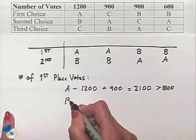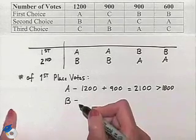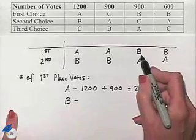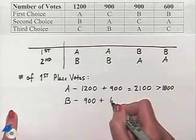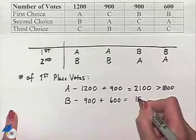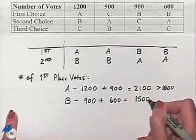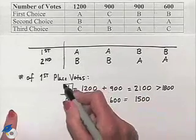If you want to go ahead and figure out the number of first place votes for B, we can, by just adding together the 900 and the 600 from our last two columns. And now it's very clear, because of the comparison, that A is going to be the winner.